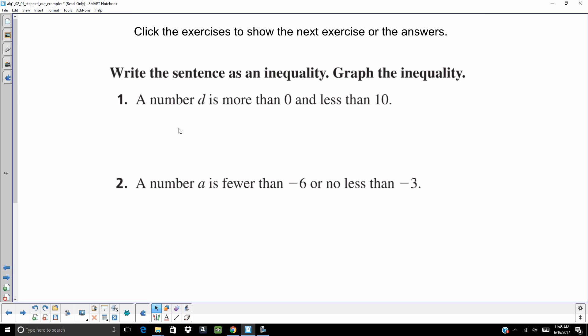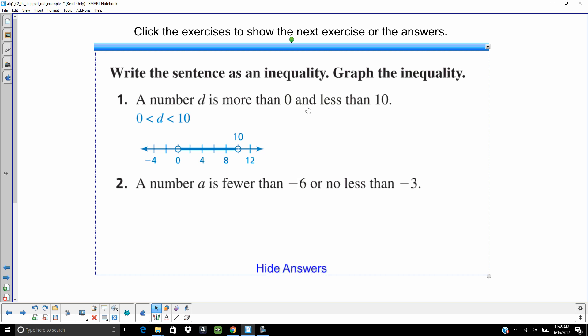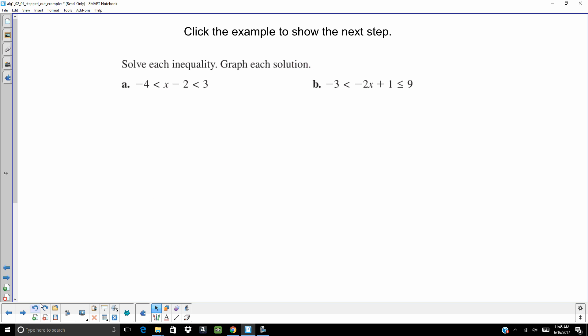So a number D is more than 0 and less than 10. Key right there is and. So it has to be bigger than 0 and less than 10. And it doesn't include those two numbers. So we're going to be using open dots. So number 2. A number A is fewer than negative 6. Or keyword there. Or no less than negative 3. So it's fewer than negative 6. That means it's smaller. Or no less than. That would be greater than or equal to negative 3. That's bigger.